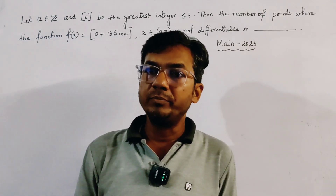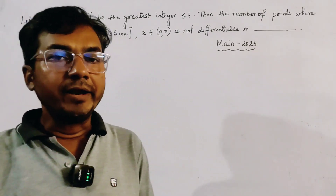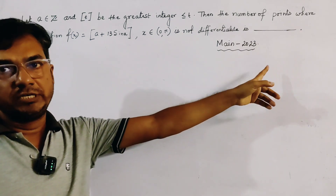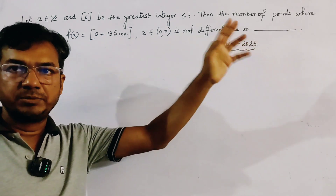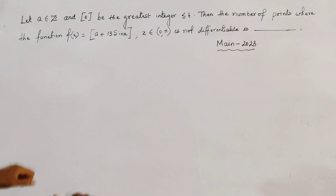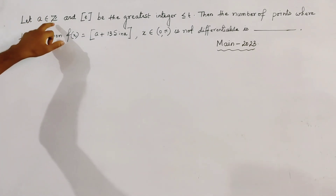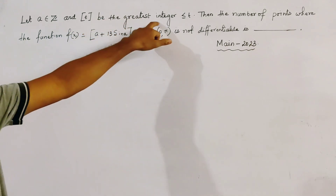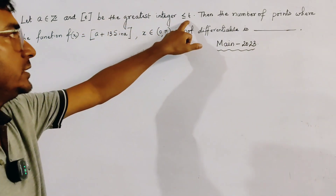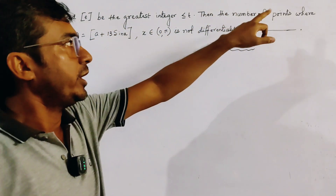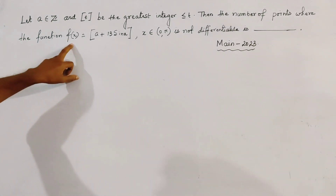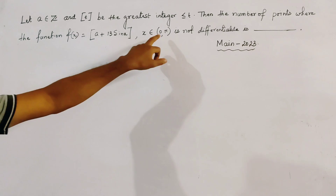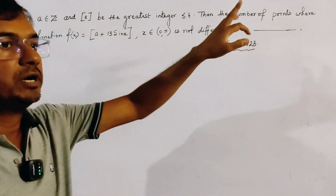This problem is from derivatives and also from JEE Main 2023, first set. The problem states: let A belong to Z (the set of integers), and box T is the greatest integer function less than or equal to T. The number of points where the function f(x) equals box of (A plus 13 sin x), for x in [0, π], is not differentiable.